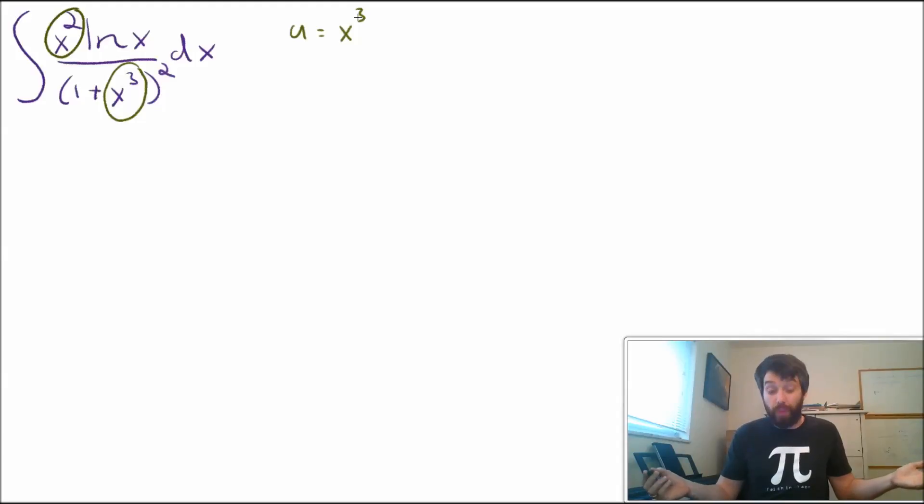So let me try what happens if I set u equal to x cubed. Maybe it's going to work out, maybe not. If I do that, then du is equal to 3x squared dx. And I might also rearrange to say that x is equal to u to the power of 1 third. This is going to be particularly useful for the ln of x, which will now be ln of u to the power of 1 third.